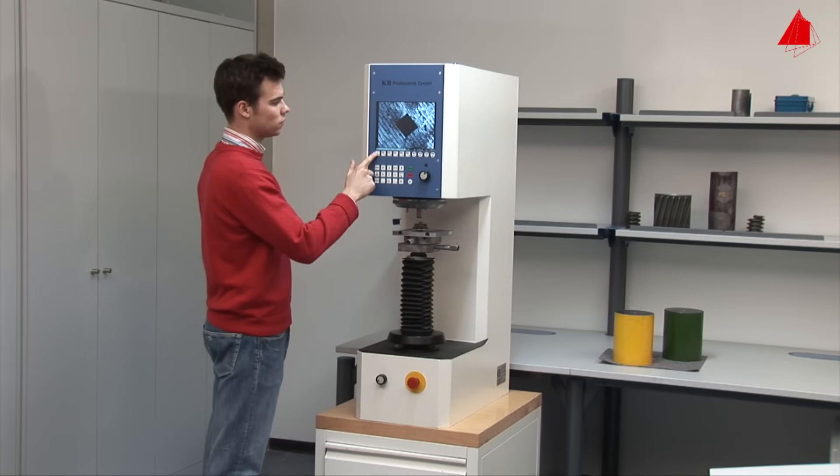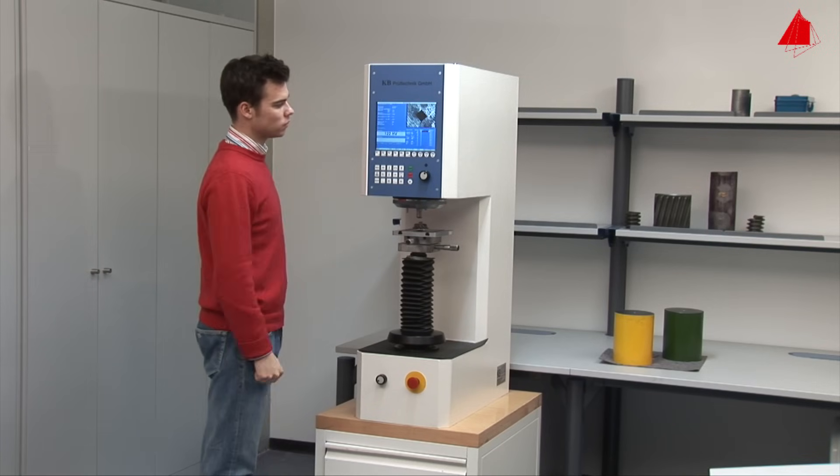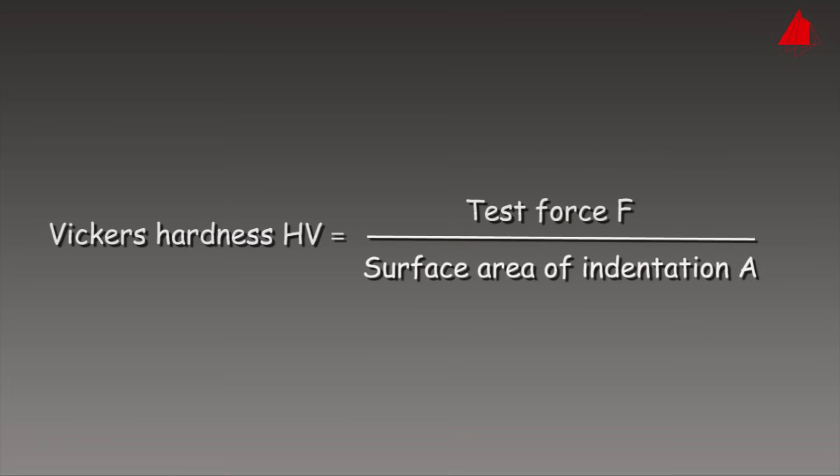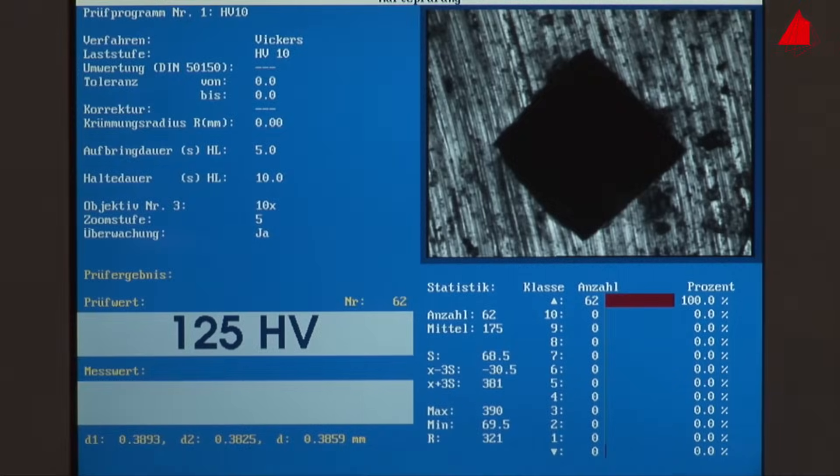Finally, he only has to push the input key. The Vickers hardness value will then be calculated automatically. It is equal to the test force F in the old unit kilopond divided by the area of the indentation A in square millimeters. The Vickers hardness of our compressor wheel is displayed on the bottom left-hand corner of the screen and amounts to 125.